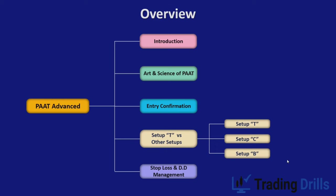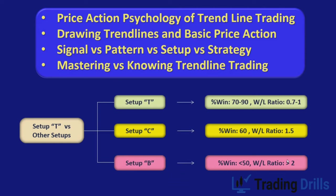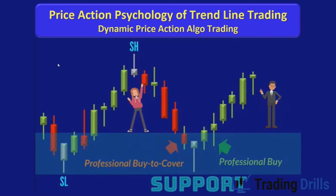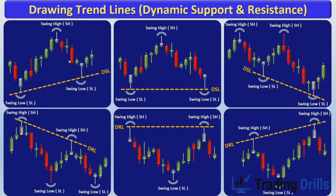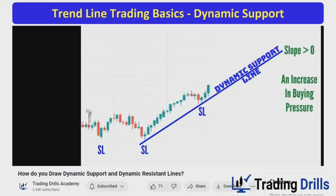We also teach setups C and B in the advanced path, which may be useful for other traders based on their psychology, timeframe, and risk tolerance. Before we begin, you need to know four key facts. First, you need to know the price action psychology of trendline trading and understand how support and resistance works — whether static or dynamic — and the four major players that move price and create patterns that make trendlines reliable.